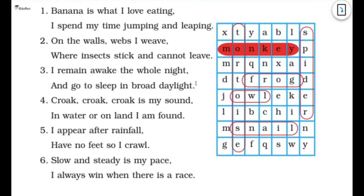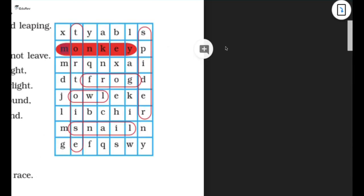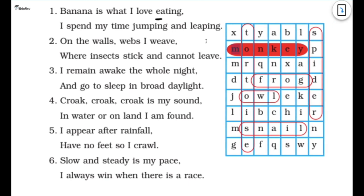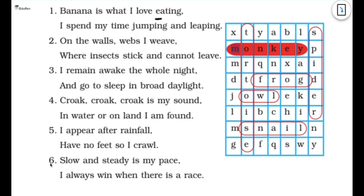Then it's who am I? Find my name with a crossword and put a circle around it. One has been done for you. So I'm going to read it and I'm going to tell you how to do it. The first one is banana is what I love eating, I spend my time jumping and leaping. So who is that? Monkey. So here we have monkey here. Next is on the walls webs I weave where insects stick and cannot leave. So we have spider. Then it's I remain awake the whole night and go to sleep in the broad daylight. So it's owl. Here we have owl. Then it's croak croak croak is my sound, in water or on land I'm found. So it's what? Frog. I appear after rainfall, have to feed so I crawl. So it's what? Snail. Slow and steady is my pace, I always win when there is a race. So we have what? We have a tortoise.